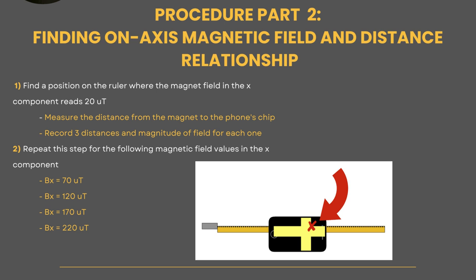Part two is that we're going to be taking this new given point, and now we know where the chip is at. We're going to be moving the phone in some direction in the x component from the phone until the x component reads 20 μT, 70, 120, 170, 220, and collect this distance so we can find a relationship.